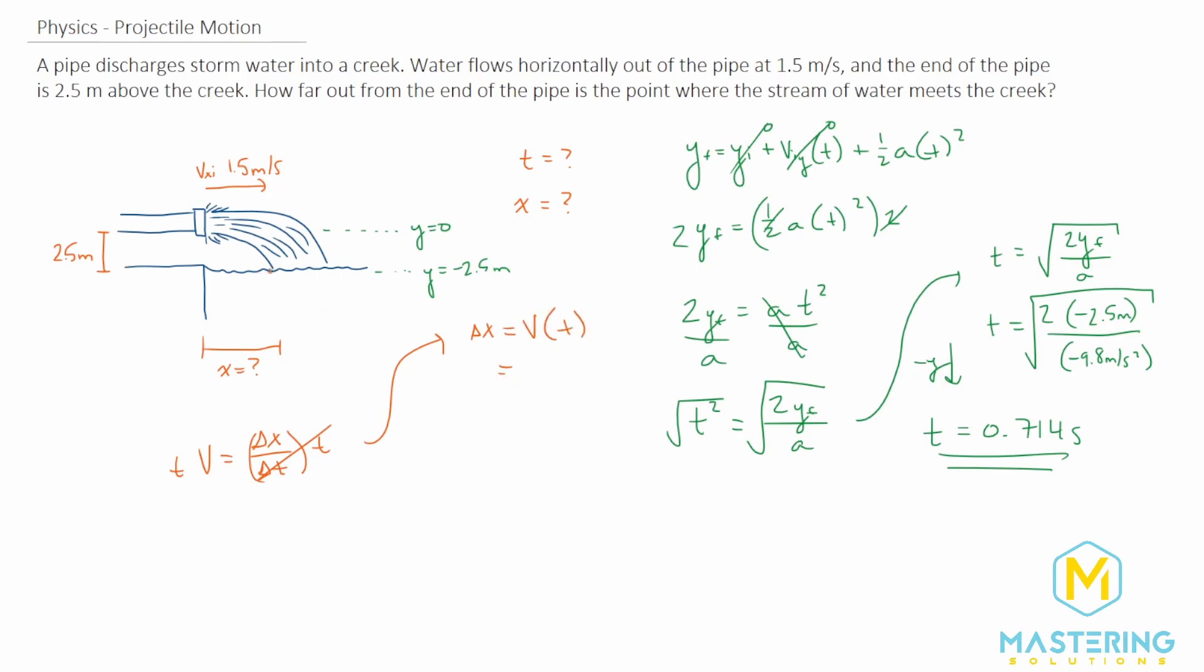Since we already talked about at the beginning of the problem that the velocity in the x direction does not change, it will stay the exact same, 1.5 meters per second, the entire time.